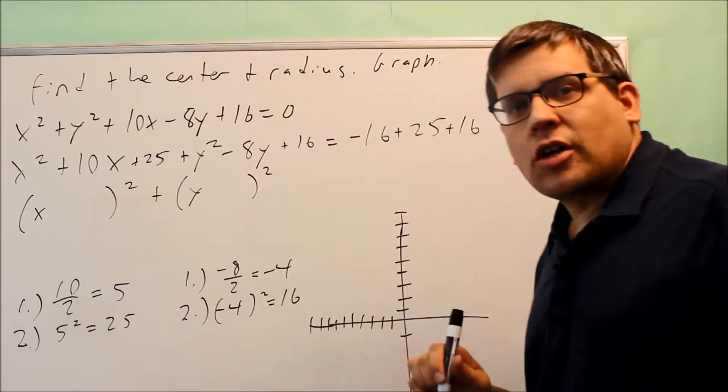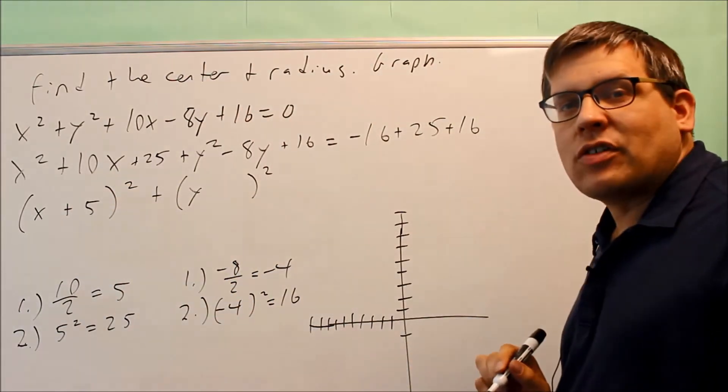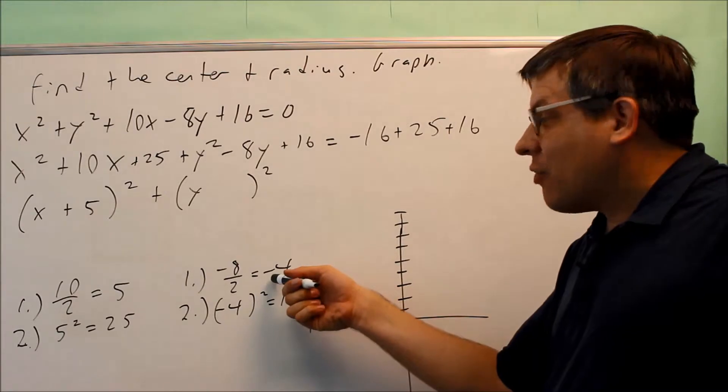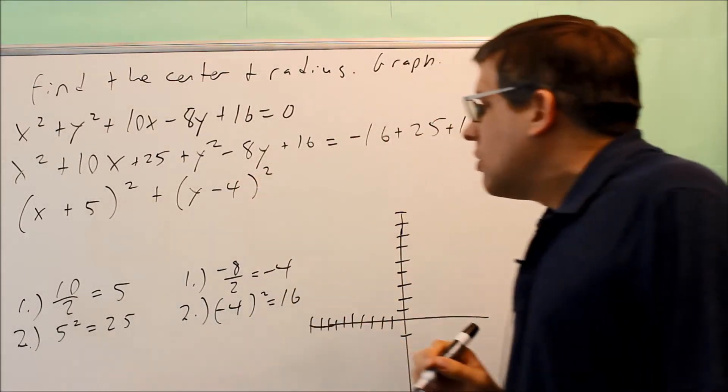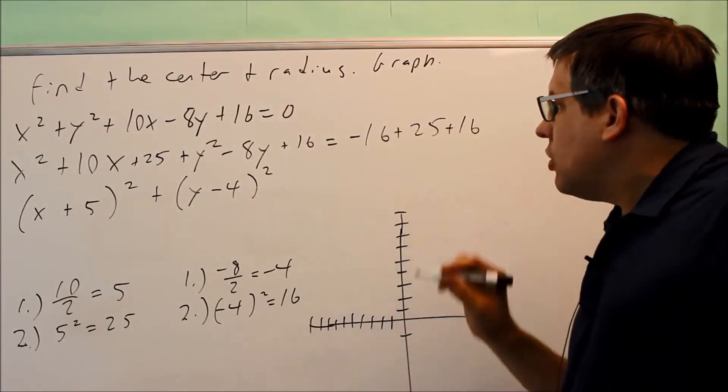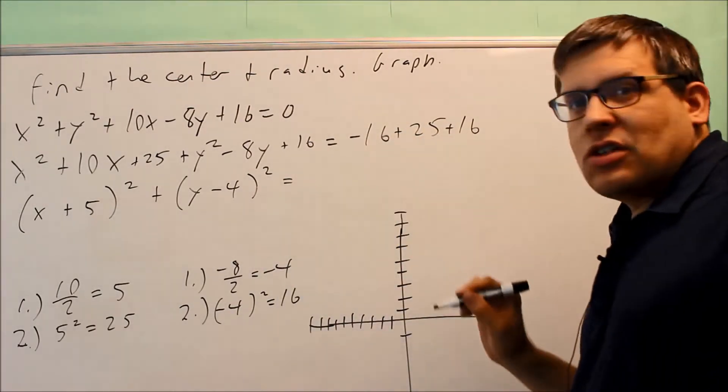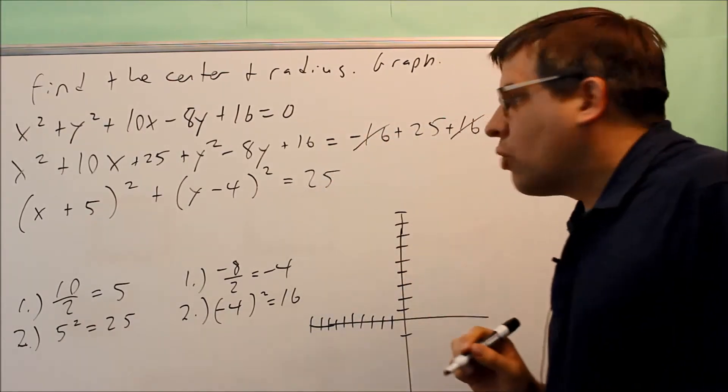So the shortcut way of factoring this is whatever answer you get in step number 1, that's what's going to go inside the parentheses. So because I got a positive 5, that means I put a plus 5 inside there. I got negative 4 for step 1 here. That goes in that parentheses, so I have y minus 4 squared. And then this side, you want to add all that together. So I have negative 16 and positive 16 cancel. I'm left with 25.